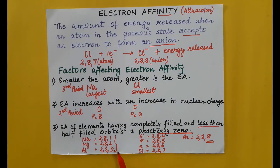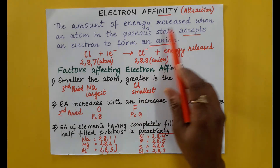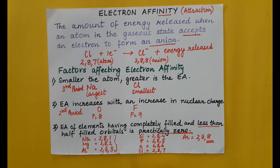These are the three factors which explain electron affinity. To summarize: electron affinity is the amount of energy released when an atom in the gaseous state accepts an electron to form an ion.